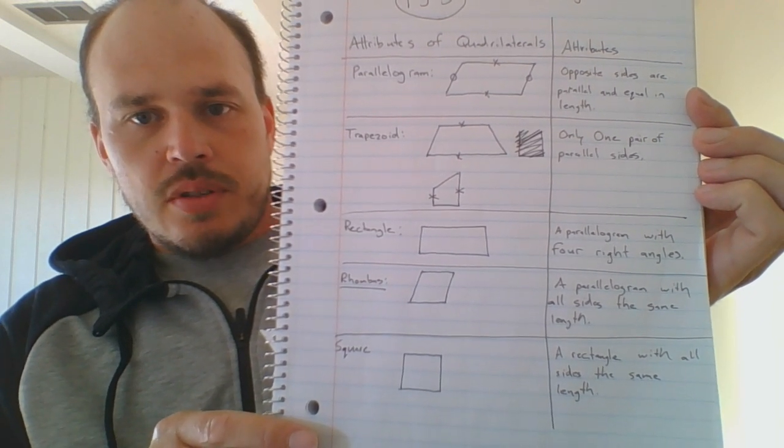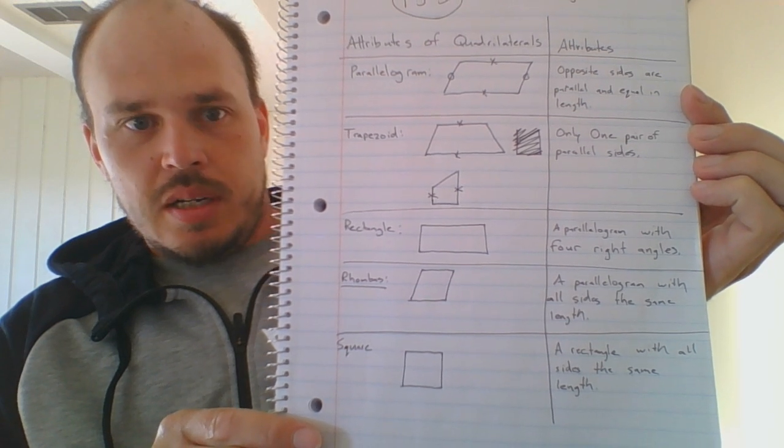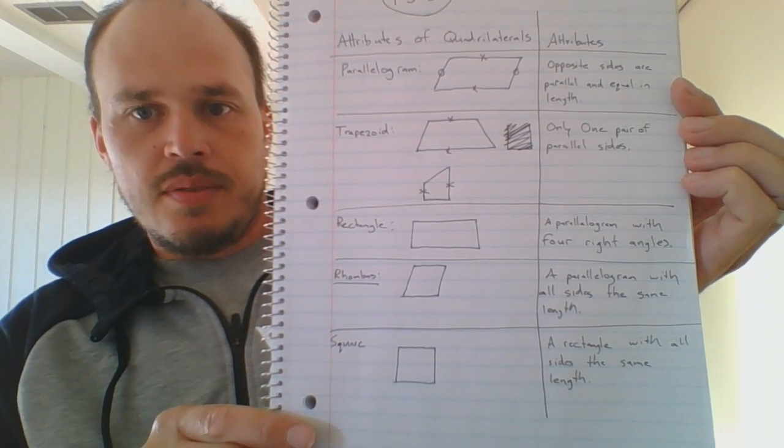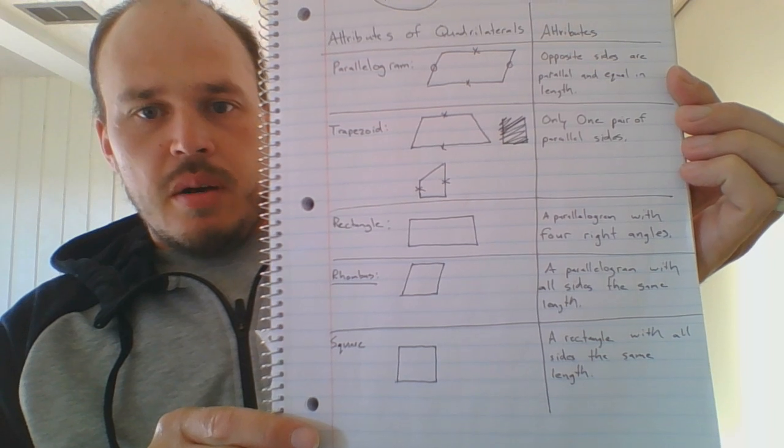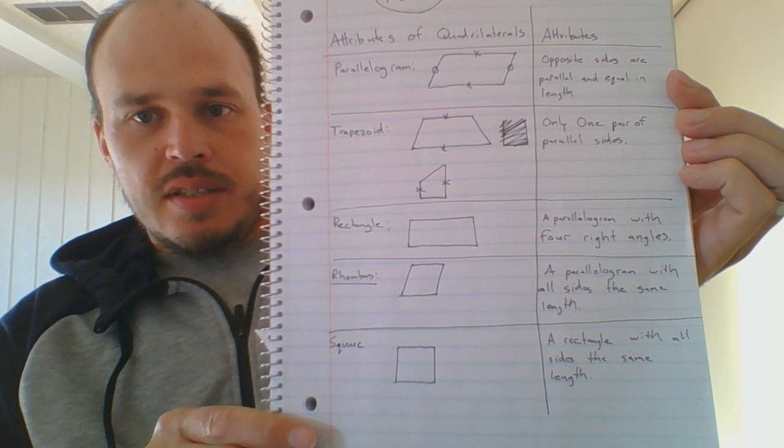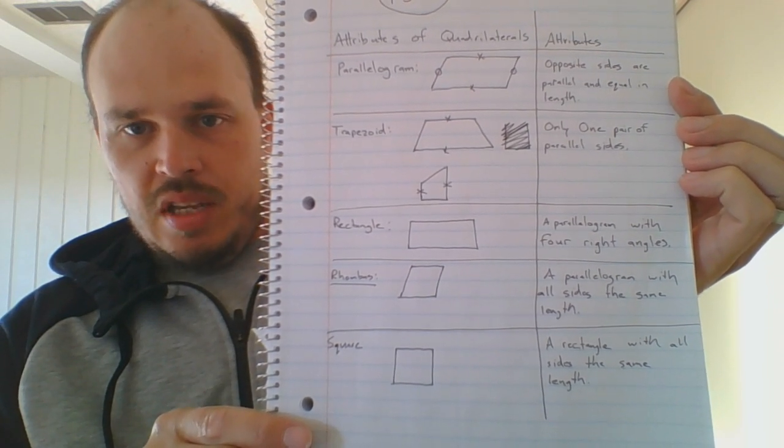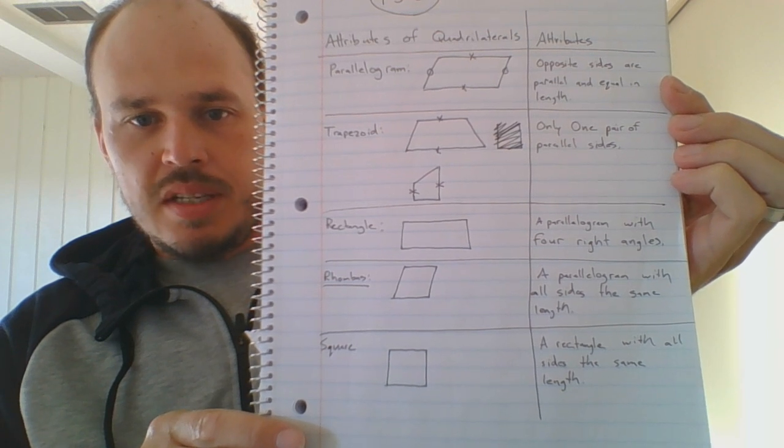So then we have a trapezoid. I drew a couple different trapezoids. The one on the bottom might pop up on a test in a few days. And they only have one pair of parallel sides. I marked those parallel sides with x's, but they do not have to be equal in length. They're just parallel, which means they never intersect.